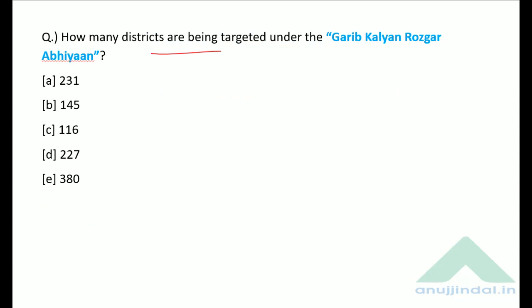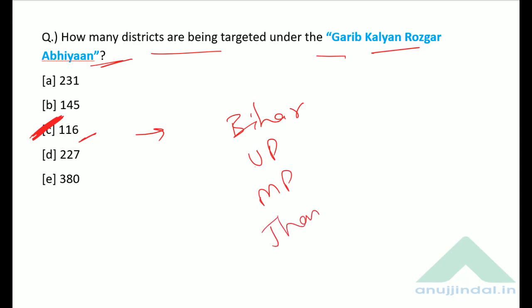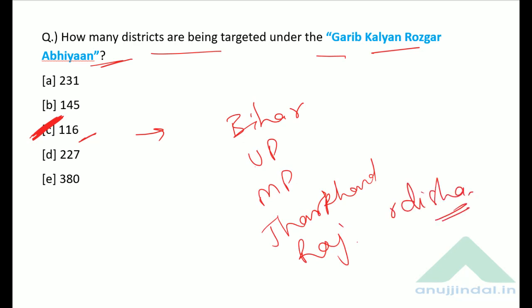How many districts are being targeted under the Garib Kalyan Rojgar Abhiyan? Under this scheme, 116 districts from six states are targeted. The six states are Bihar, Uttar Pradesh, Madhya Pradesh, Jharkhand, Rajasthan, and Odisha.